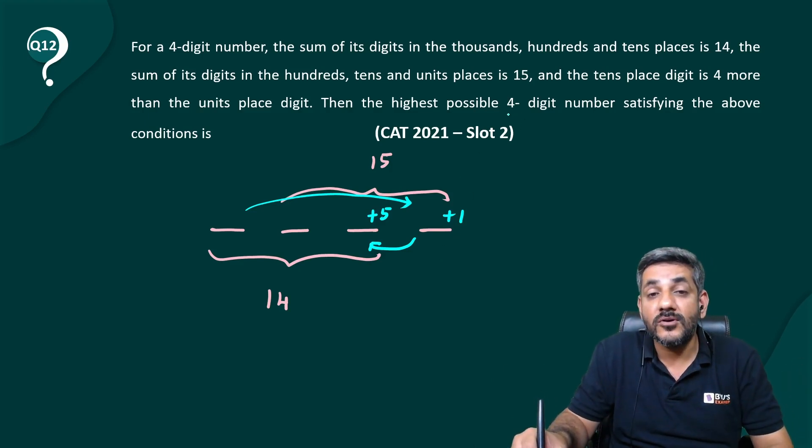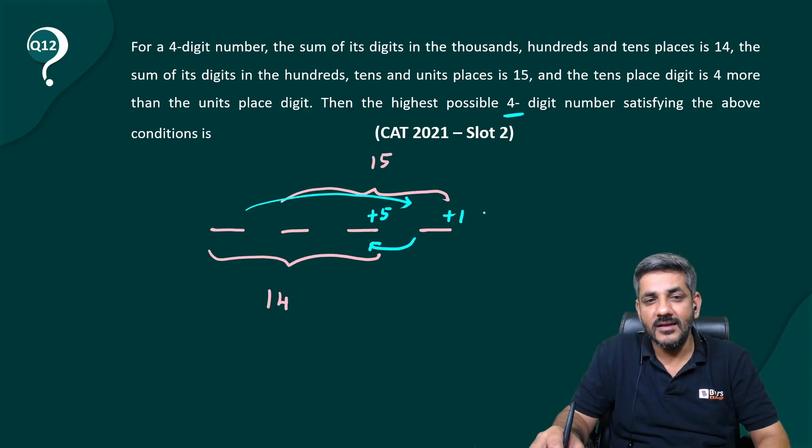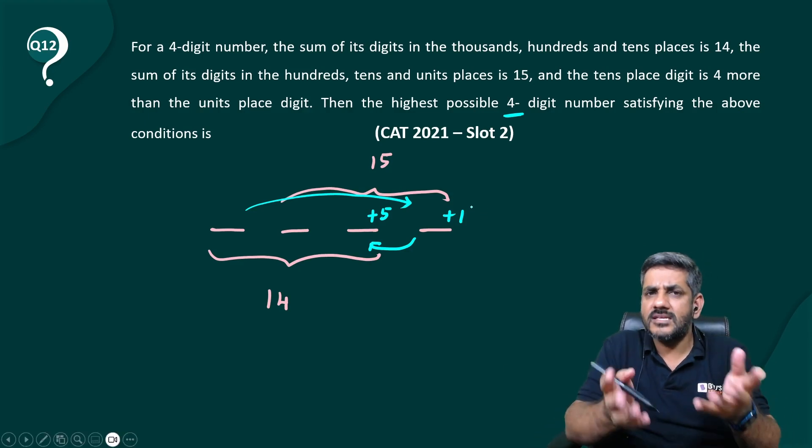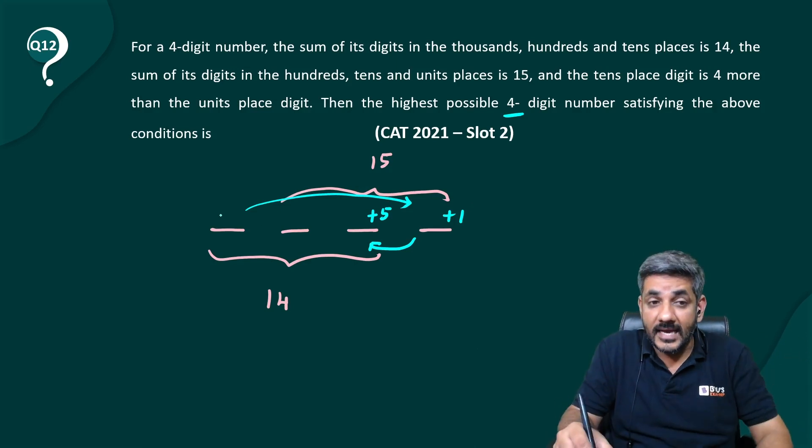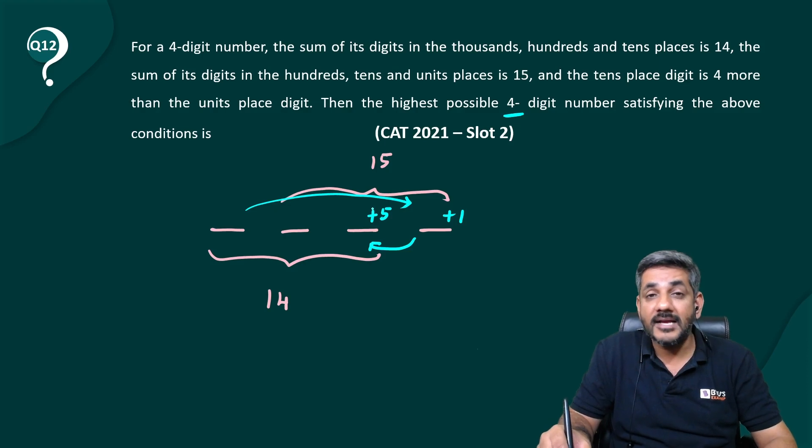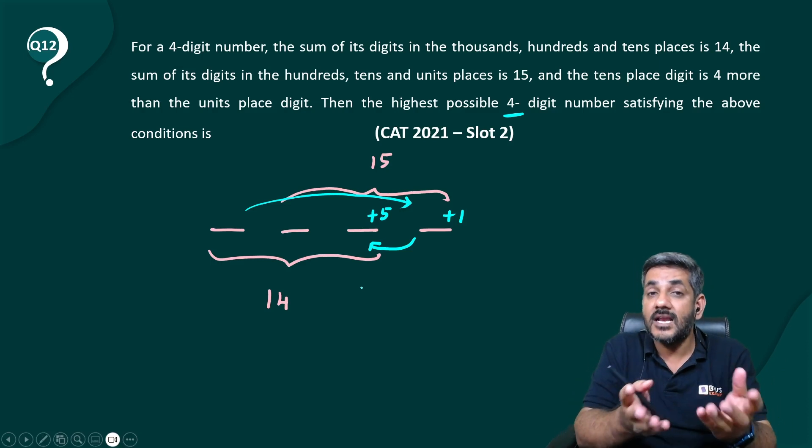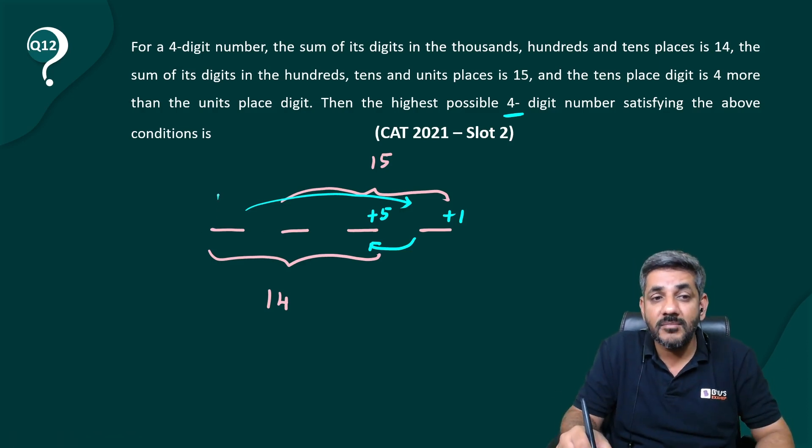The highest possible four-digit number satisfying this condition. To have a highest possible number, one thing is very clear. The first digit has to be the largest possible. Can I write it as nine? Of course not. If I write it as nine, this would be 14. I cannot have 14 as a digit. So, what is the maximum digit in which you can have an increase of five and still have a single digit? Of course, it can be four only, right?